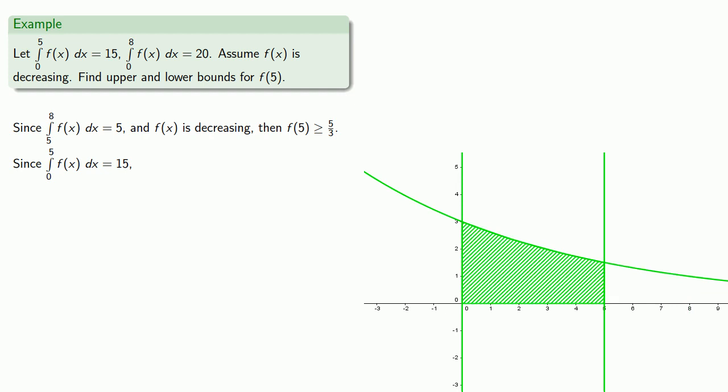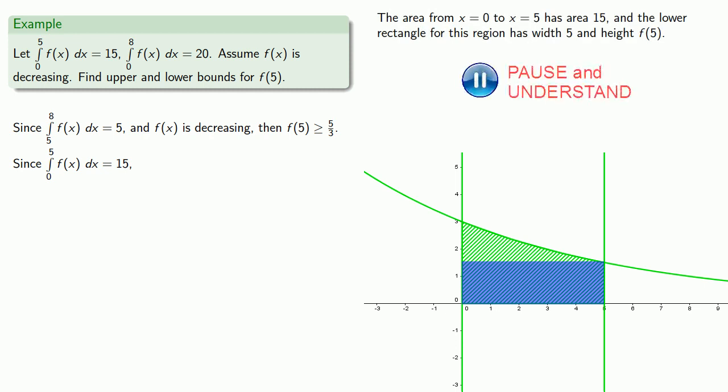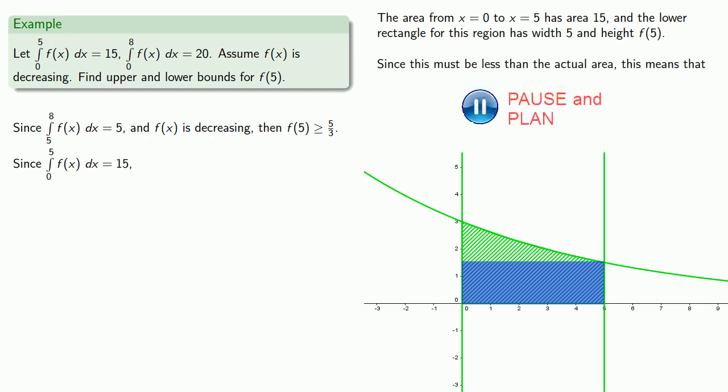Well let's take a look at the lower rectangle for this region. It's going to have width of 5 and height of f of 5. And since this must be less than the actual area this tells us f of 5 must be less than or equal to 3 and so 3 is an upper bound for the value.